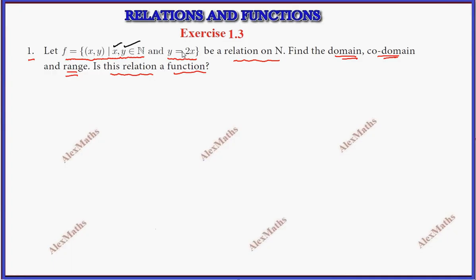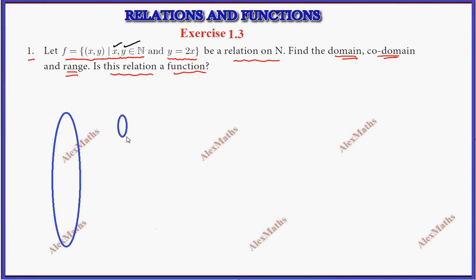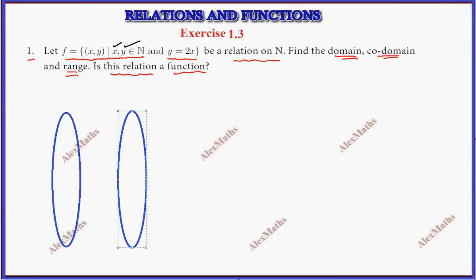x and y belong to natural numbers. The first set is x, the second set is y. We have natural numbers: 1, 2, 3, 4, 5, 6, 7, 8, and so on.